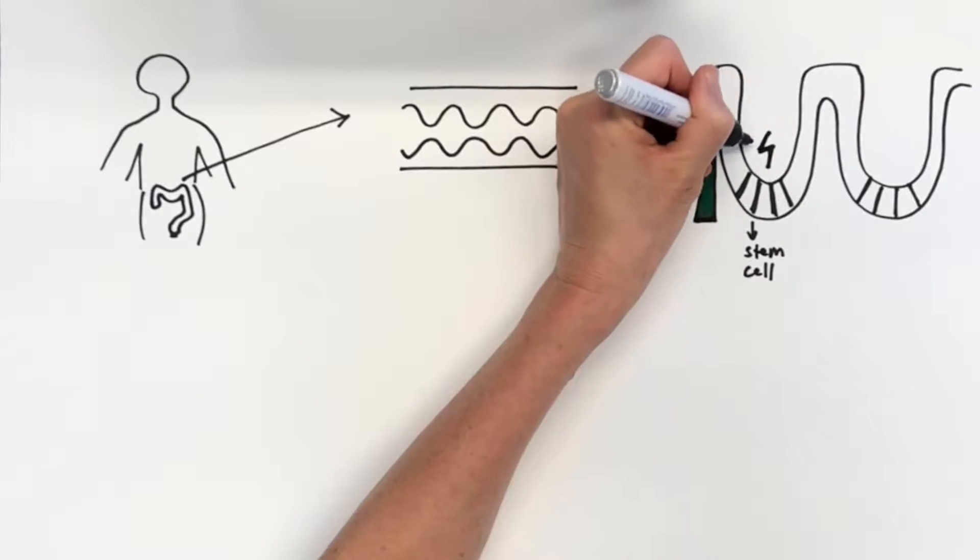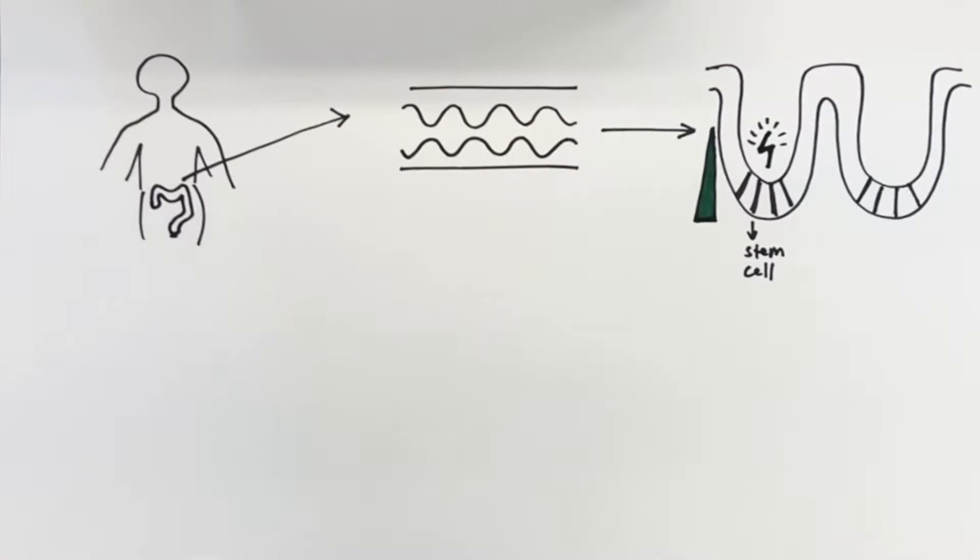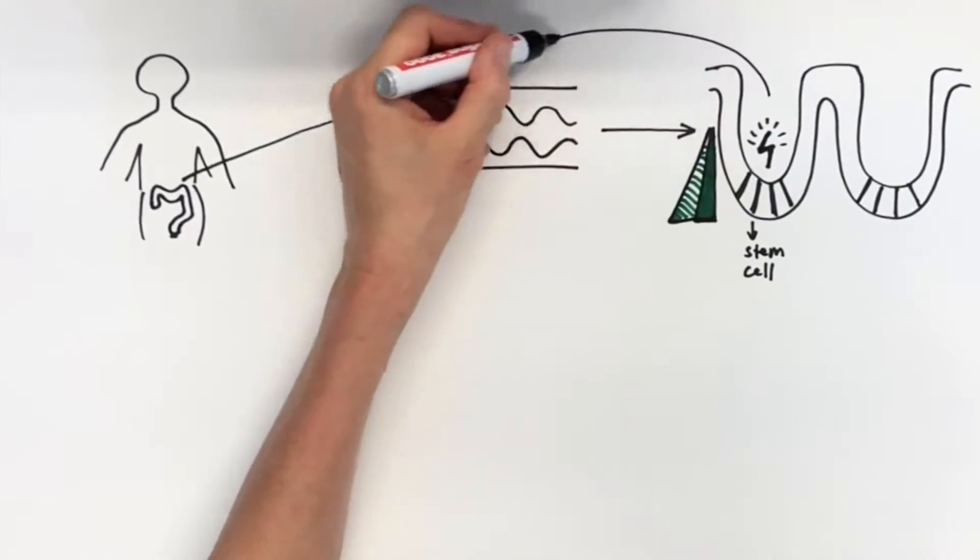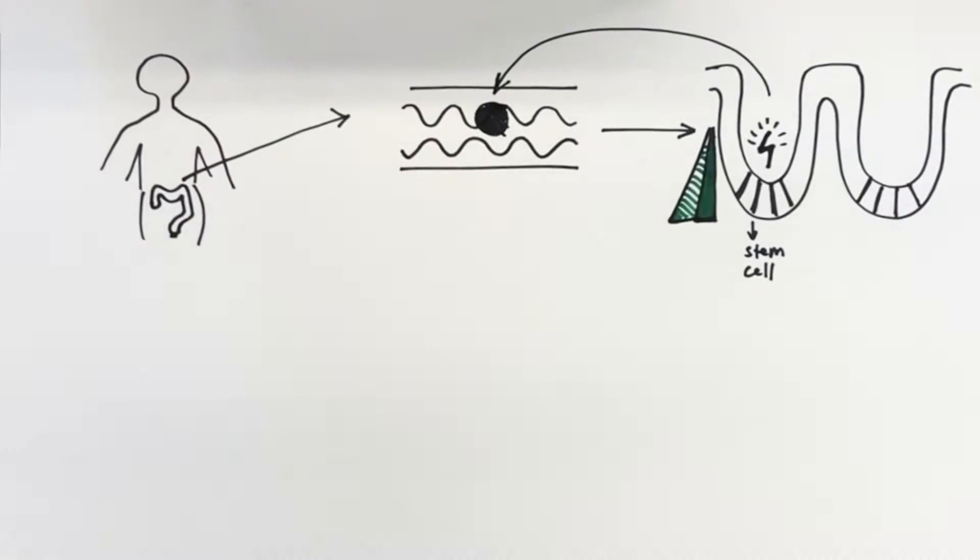If mutations occur in the regulatory genes of the Wnt pathway, this may result in amplified Wnt signaling levels. Enhanced Wnt signaling is causal to the formation of colorectal cancer.